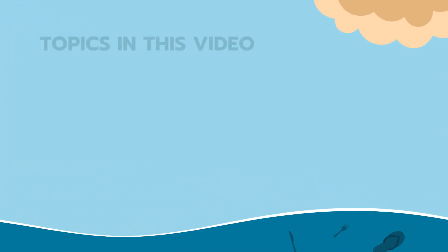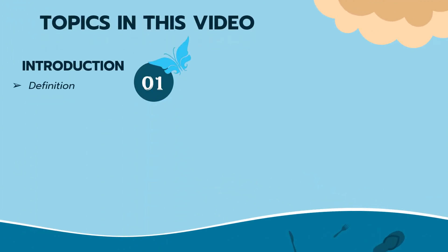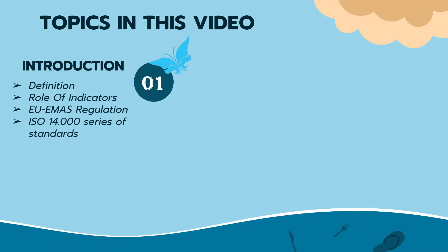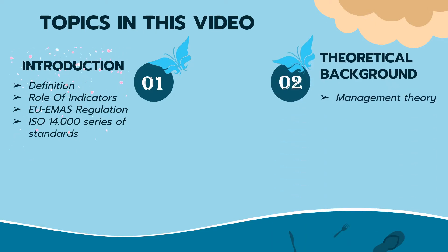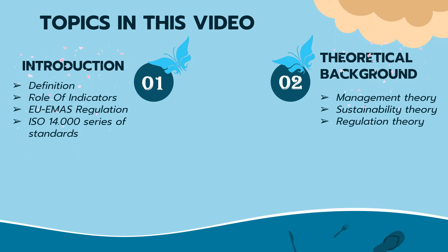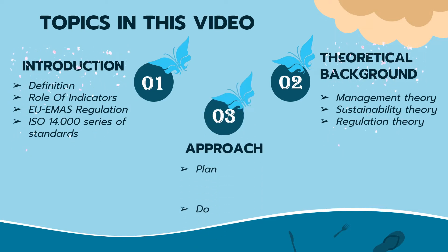In this video, we will learn about the introduction of EPE. In the introduction of EPE, there are four subtopics: definition, role of indicators, EU-EMAS regulation, and ISO 14000 series of standards. Next, theoretical background with subtopics: management theory, sustainability theory, and regulation theory. And the last is an approach with subtopics: plan, do, check, and act.